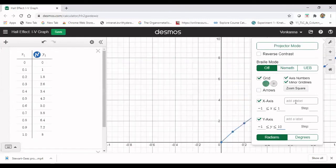And you can also label the x-axis as I current and y-axis as Hall voltage.